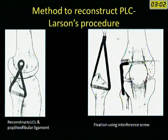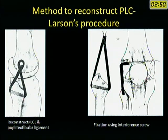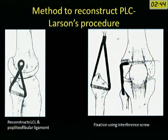There are various methods to reconstruct the posterolateral corner. In India, the Larson's method is the most popular, where you pass the graft through the fibular head and fix it to a point just anterior and superior to the lateral epicondyle of the femur, using either a spiked washer and screw or an interference screw after drilling a tunnel.